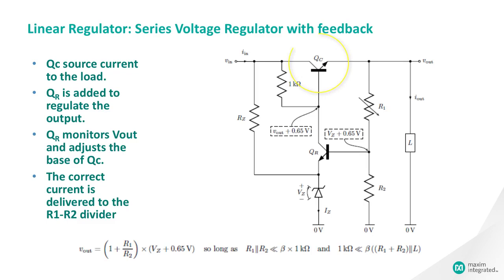QC sources current to the load. QR is added to regulate the output.